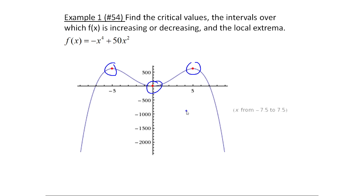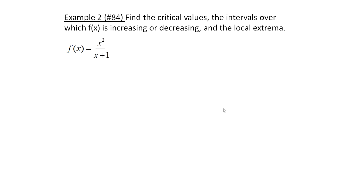This next example is very similar, but a big difference is that we have an x plus one in the denominator — it's not a polynomial. This tells me we might end up with some partition numbers that are not critical values, depending on how the function works out. As before, the way to answer this question is to first find the derivative and then analyze everything from there.